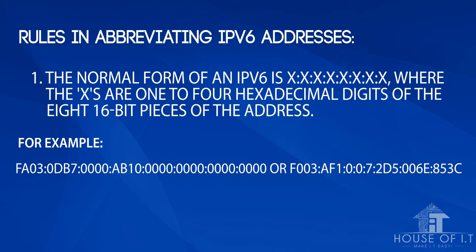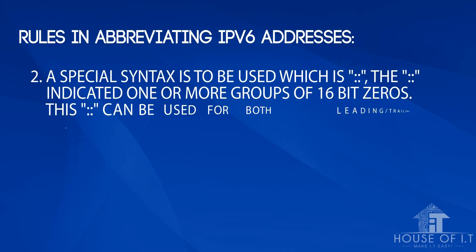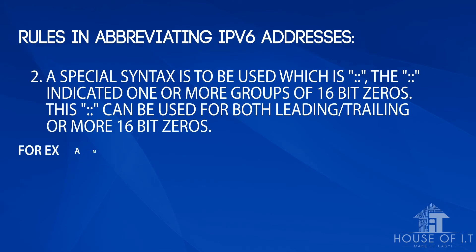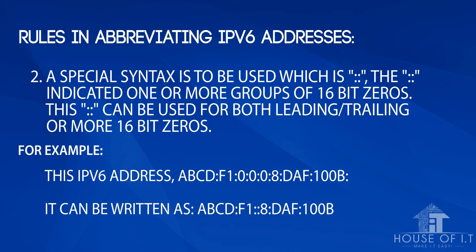It is not necessary to write the leading zeros in an individual field, but there must be at least one numeral in every field — except in the case described in rule 2. It is common for IPv6 addresses to contain long strings of zero bits, so a special syntax — the double colon — is used. The double colon indicates one or more groups of 16-bit zeros, but it can only appear once in an address to avoid confusion.